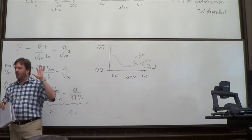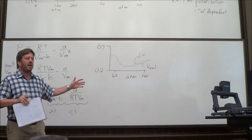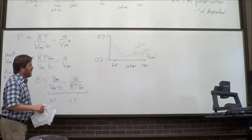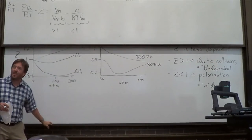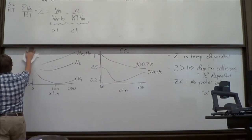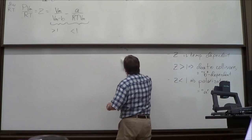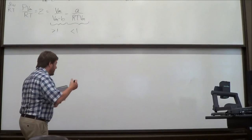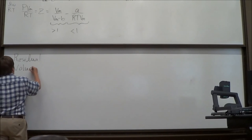I'm going to do another example of measuring non-ideal behavior. I tend to put these on tests - I guarantee you will see this again. This is low-hanging fruit. There is a second way to quantify how a real gas is different from an ideal gas, which is called a residual volume.